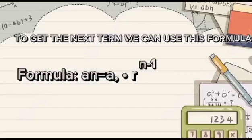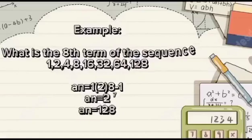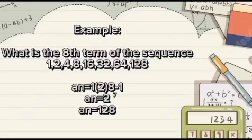This is the formula: a sub n equals a sub 1 times r raised to n minus 1. Example: what is the eighth term of the sequence? Since our first term is 1, and our common ratio is 2 — because 1 times 2 is 2, 2 times 2 is 4 — so we get the common ratio of 2. Since our term is 8, that is the eighth term, then n minus 1.